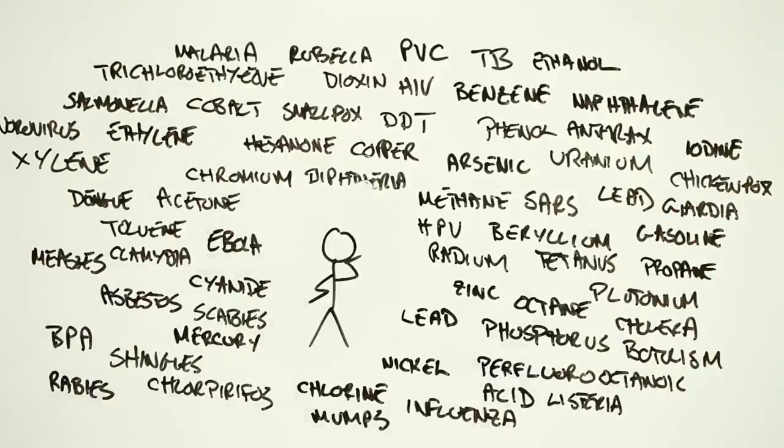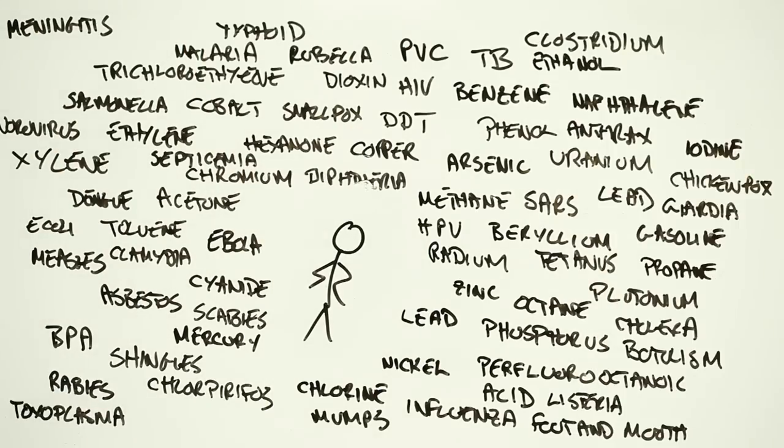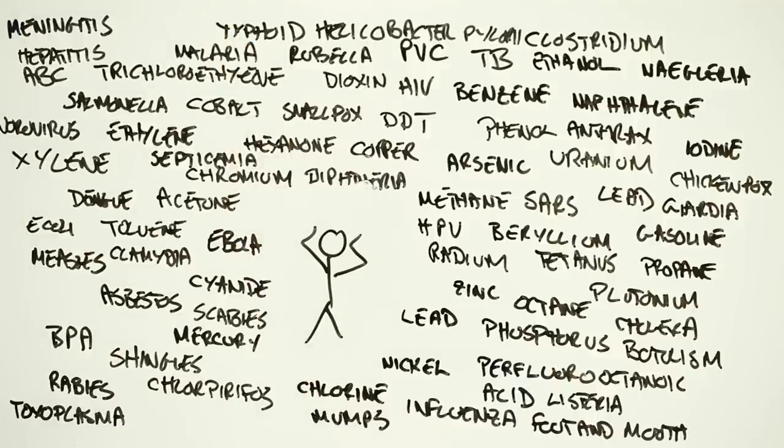There's salmonella, botulism, norovirus, giardia, toxoplasma, foot and mouth and cholera, septicemia, meningitis, typhoid and clostridium, naegleria and helicobacter pylori and hepatitis ABC.